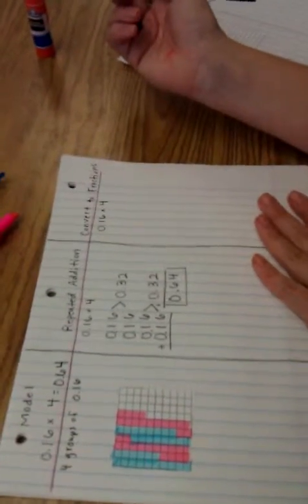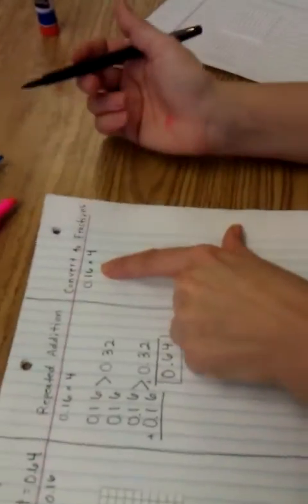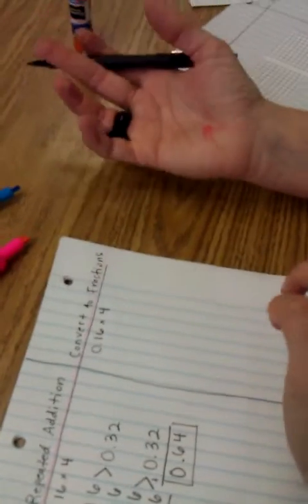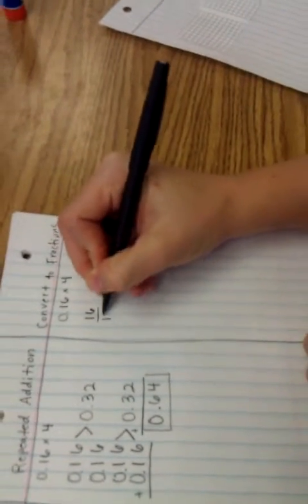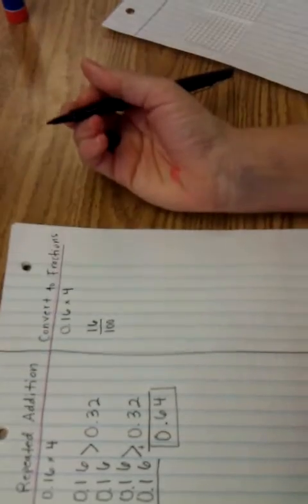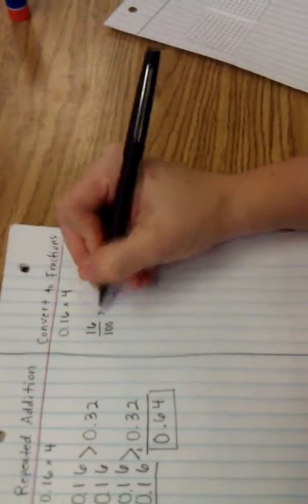I'm going to go ahead and show you convert to fractions as well. So fractions and decimals can be used interchangeably. I know that 16 hundredths written as a fraction is 16 over 100 or 16 hundredths. I'm multiplying it by 4.